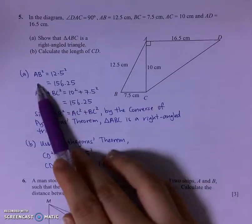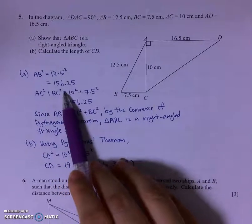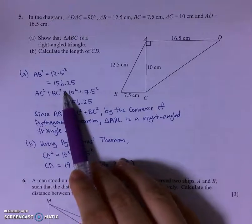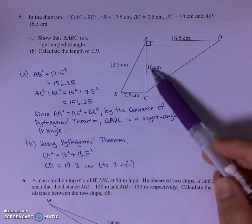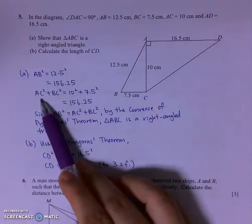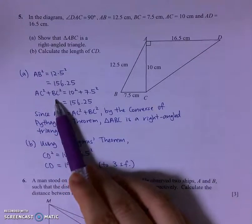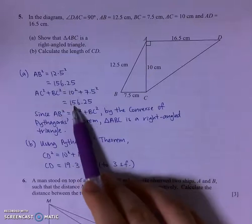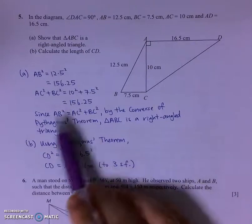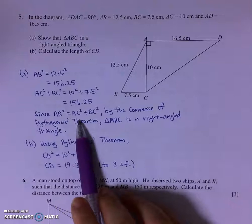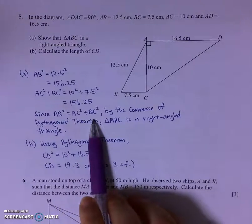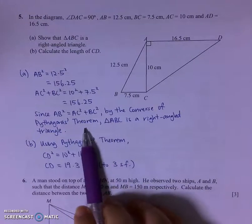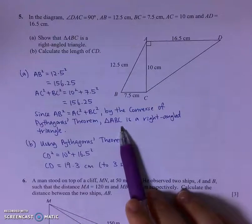So AB square is 12.5 square. Then I find the sum of the squares of the two shorter sides, AC square plus BC square. And the two values here are actually the same. So since AB square is equal to AC square plus BC square, for the converse of Pythagoras theorem, I know that triangle ABC is a right-angled triangle.